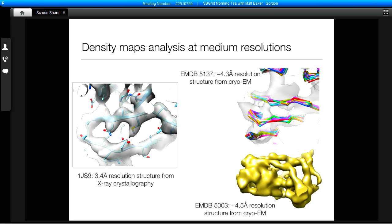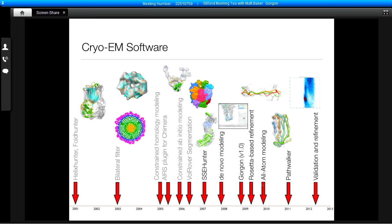At slightly lower resolution, typically obtained by cryo-EM, the features are quite different. At around 4 angstrom resolution, we can begin to see some separation of beta sheets, but they're not unambiguously separated. The chain trace is more or less evident in many places, but there's a lot of ambiguity and the density isn't fully resolved everywhere. At 4.5 to 5 angstrom resolution, we begin to lose definition of beta sheets. We can still see the pitch of the alpha helix, but tracing the overall backbone becomes very difficult.